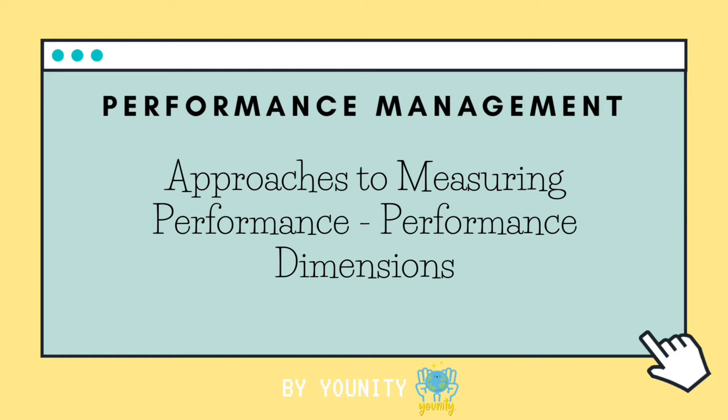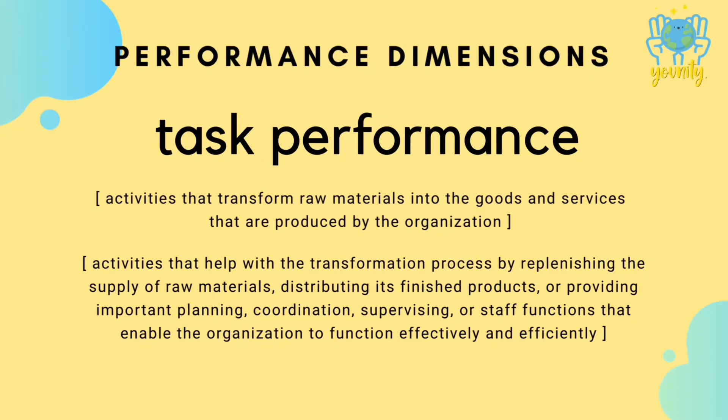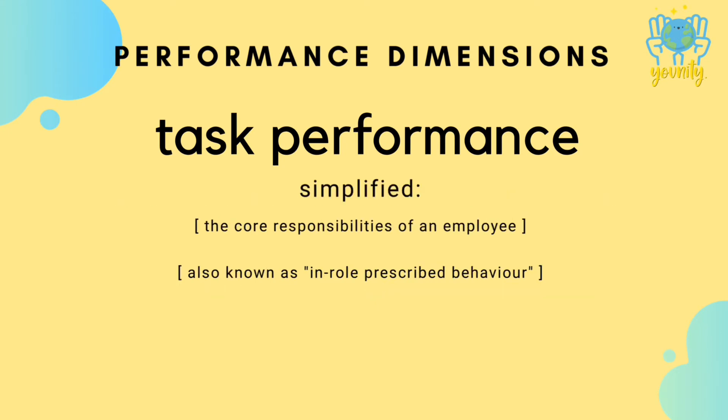Although there are many types of behavior, there are two types of behaviors or performance facets that stand out. First, we have task performance. These are the textbook definitions of task performance. To simplify, task performance describes the core job responsibilities of an employee. It is also called in-role prescribed behavior and is reflected in specific work outcomes and deliverables, as well as their quality and quantity.